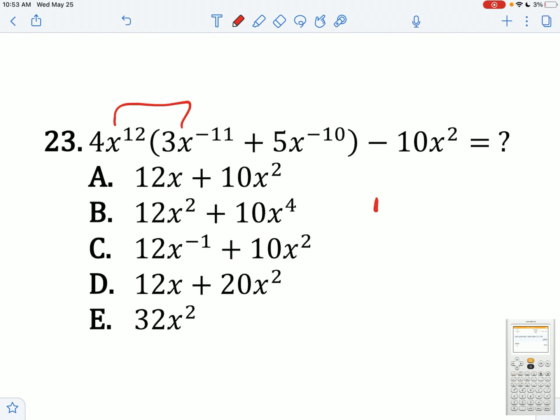4x times that is going to give you 12x. And then this times this is going to give you 20x squared minus 10x squared. You end up getting 12x plus 10x squared.